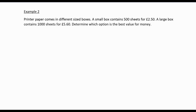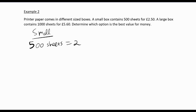Here's another example. This time we have a small box of printer paper with 500 sheets for £2.50, so 500 sheets is 250 pence. To work out how much 100 sheets costs, we divide both sides by 5: 250 divided by 5 is 50, so we have 100 sheets for 50p.